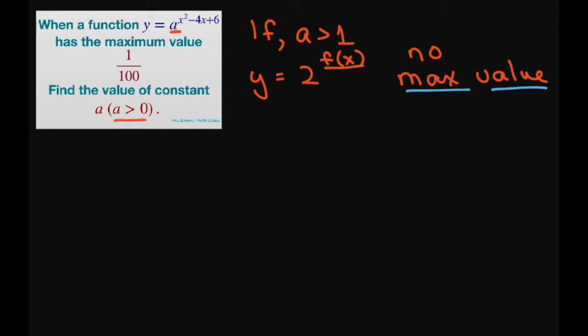So let's try if a equals 1. If we have a equals 1, then we have y equals 1 to some f of x, letting this be f of x. And that means it can never be a maximum value of 1 divided by 100, because the maximum value would always equal 1. So that can't work. These two can't work.